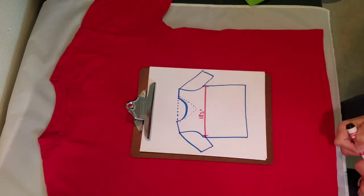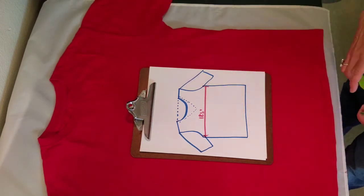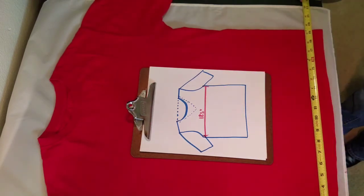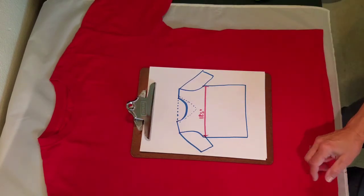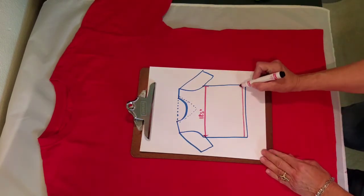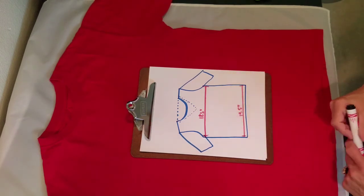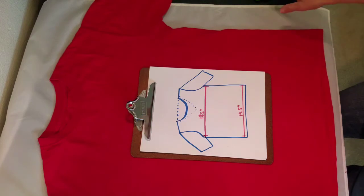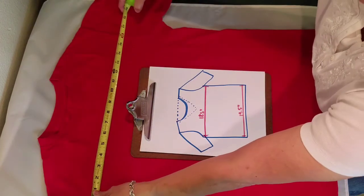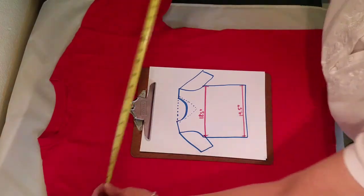Then measure the lower edge of the garment across. 19 and a half inches. Measure the width of the upper body of the garment from armhole to armhole. 16 inches.